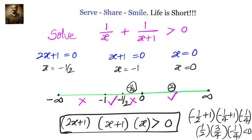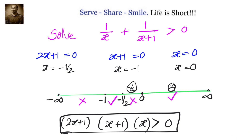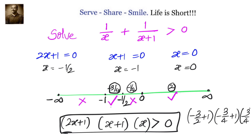Now let us check between -1 and -1/2. Let us take x = -3/4. Substituting: 2×(-3/4) = -3/2, so (-3/2 + 1)(-3/4 + 1)(-3/4) = (-1/2)(1/4)(-3/4). Minus times minus gives a positive result, which is greater than 0. So the interval (-1, -1/2) satisfies the inequality.